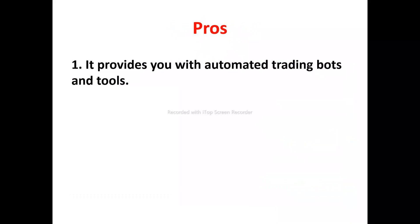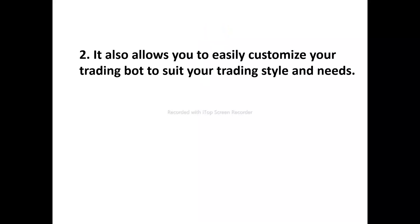The first pro of Coinrule: it provides you with automated trading bots. Coinrule provides you with automated trading bots that you can easily make use of to automate your trading. These bots enable you to set specific conditions under which your trades will be executed automatically, helping you take advantage of market opportunities even when you are not actively monitoring your portfolio, thereby maximizing your profit.